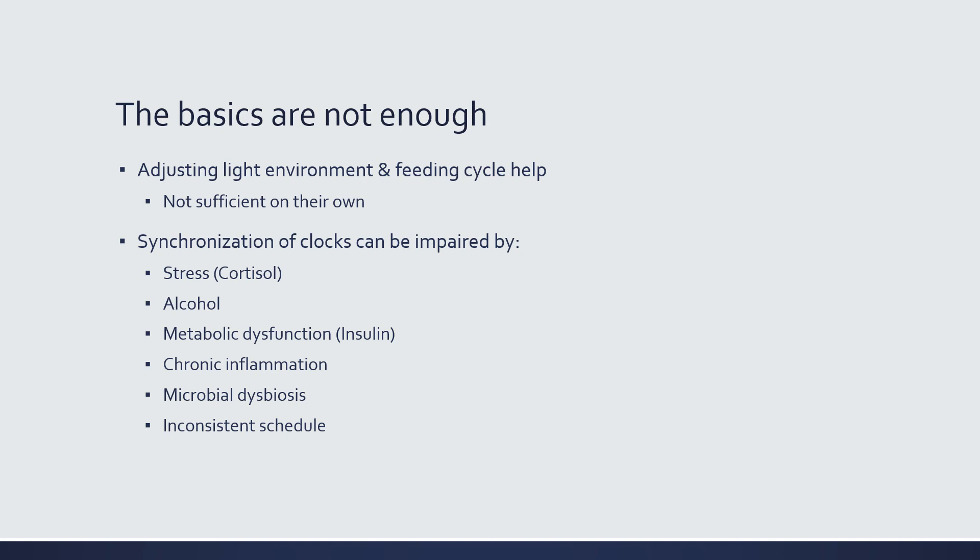Microbial dysbiosis: if your microbiome is disrupted — not very diverse or lacking key functions — you won't be able to synchronize that microbial clock with your other clocks, causing problems typically centered around digestion and immune function with knock-on effects everywhere. Finally, an inconsistent schedule: many people have a different weekday versus weekend schedule — waking, eating, and going to bed at different times. This disrupts your circadian clock and prevents synchronization of your circadian clock with your behavioral rhythms.